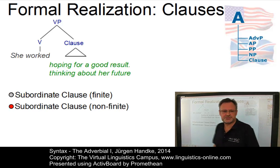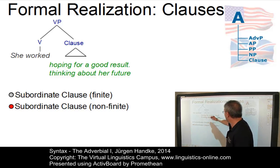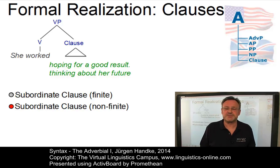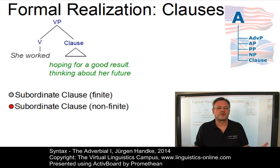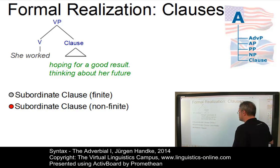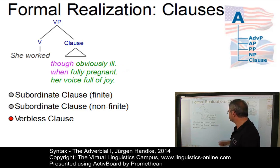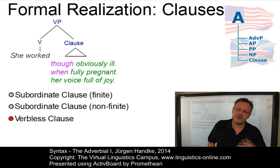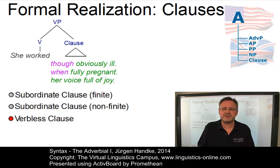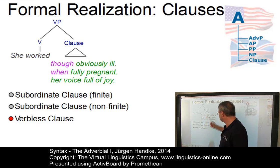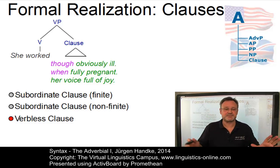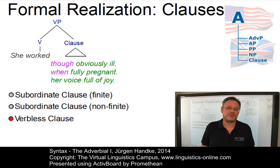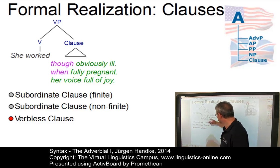Then we have non-finite subordinate clauses, such as 'she worked hoping for a good result' or 'thinking about her future.' Non-finite clauses exhibit an untensed verb, normally in the infinitive or participle form, and depending on the verb, a more or less complex complementation structure. The last example I would like to mention are verbless clauses: 'she worked though obviously ill', 'when fully pregnant', or 'her voice full of joy.' Verbless clauses normally exhibit a conjunction that signals the semantic relationship — concessive in 'though obviously ill' or temporal in 'when fully pregnant.' The verb itself is absent. Sometimes even the conjunction can be dropped, as in 'her voice full of joy', which gives several options for semantic interpretation: temporal, causal, and so on.